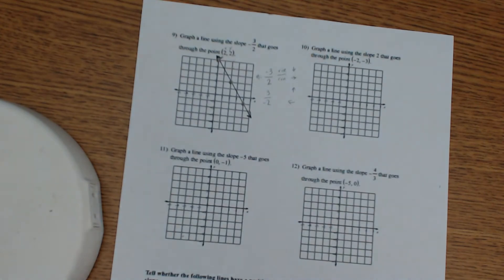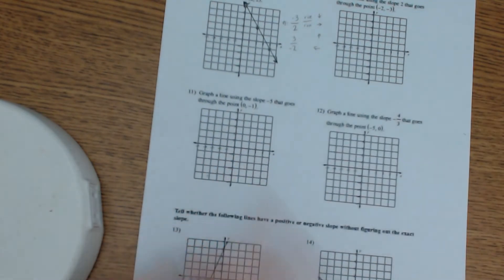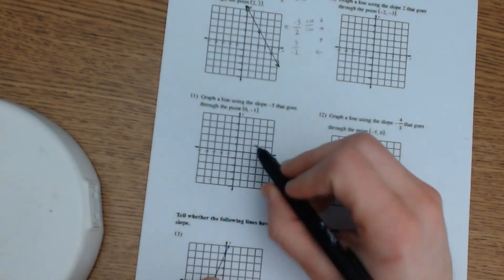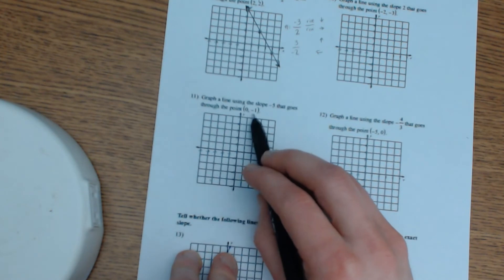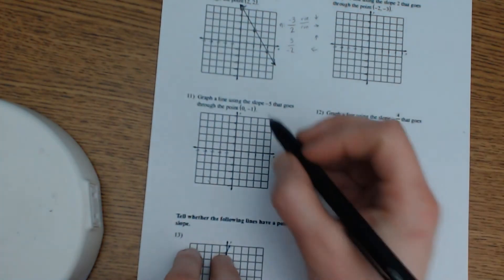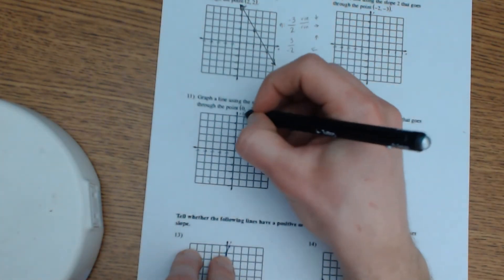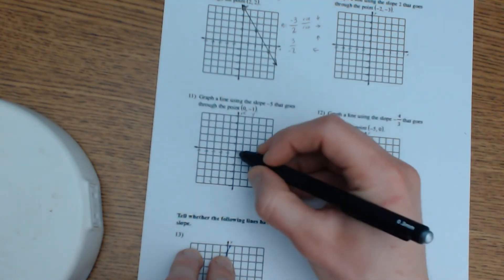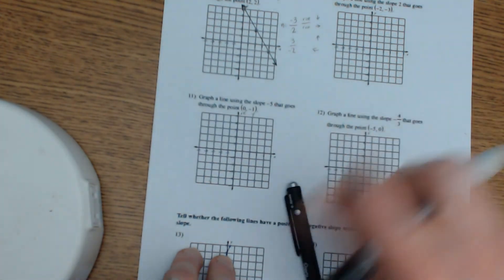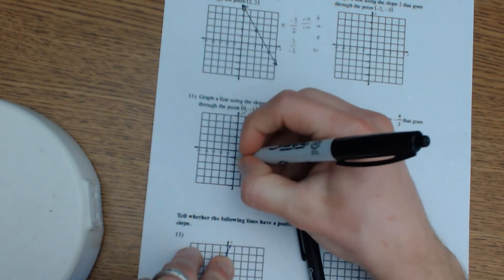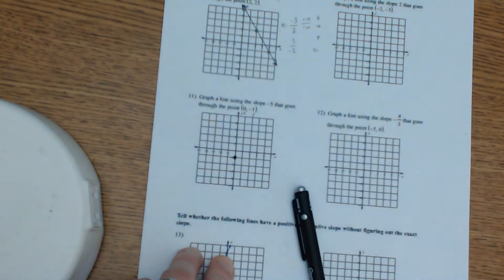Now I'm going to go ahead and jump to number 11. I'm going to leave these other two for you to do. So on number 11, it says it has a slope—we're going to graph a line. It has a slope of negative 5, and it goes through the point (0, -1). So remember, once again, we're going to start with our point first. I'm going to write x, y to remind myself. So for x, I'm not moving left and right at all, but I'm going down negative 1. There's my first point.